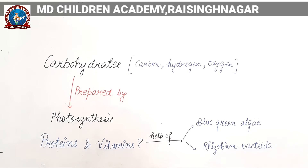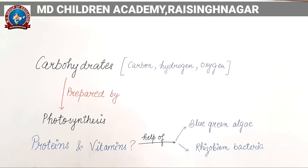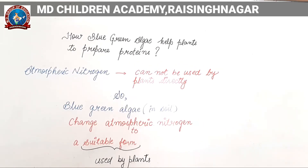One is, proteins and vitamins are prepared with the help of blue-green algae. This is a type of algae. The plural form of alga is algae. This is one species, blue-green algae, which is present in the soil. The second is rhizobium bacteria. First, we are going to discuss how blue-green algae help plants to prepare proteins.